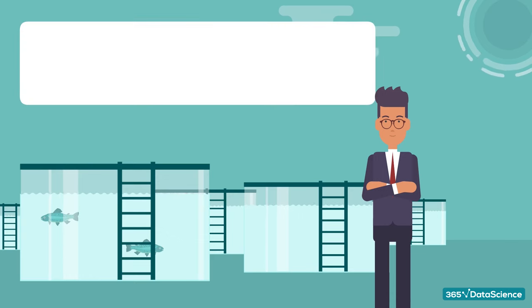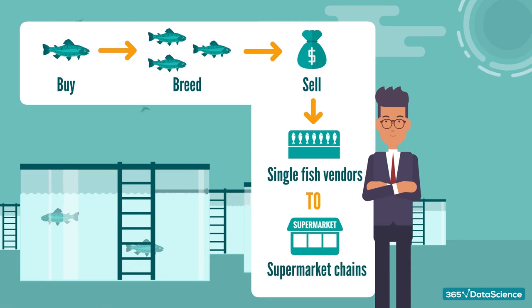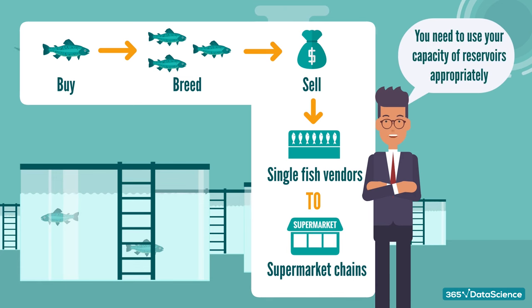The farm operates in the following way – you buy and breed fish, which you later sell. Your clients range from single fish vendors to supermarket chains. Quite straightforward, right? But to transform the above procedure into a cycle, you need to use your capacity of reservoirs appropriately.